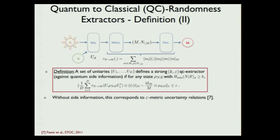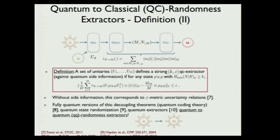Stuff like this has been considered in the literature before. If you forget about the quantum side information and delete the E system, this corresponds to so-called epsilon metric uncertainty relations. One could also consider the fully quantum problem where the input and output system are both quantum — this is known as decoupling theorems, quantum state randomization, or quantum extractors, which we call quantum-to-quantum randomness extractors. But we're interested in the intermediate case: starting with a quantum system and ending with a classical system.